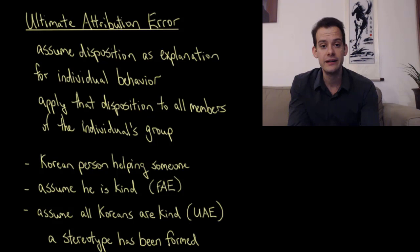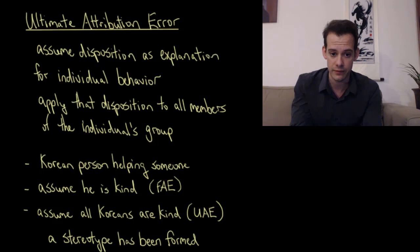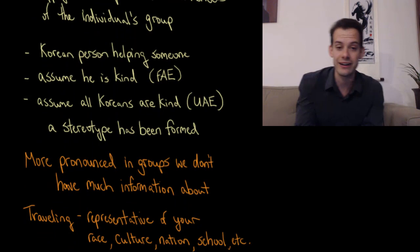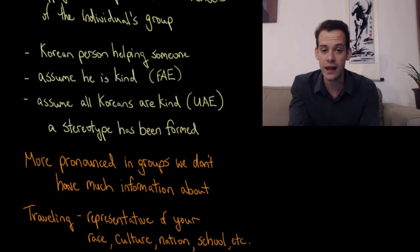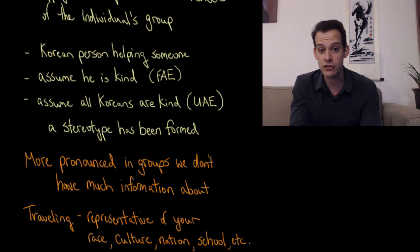For example, imagine I see a Korean person helping someone and I make the fundamental attribution error — I assume he's helping because he's a kind person. The ultimate attribution error would be concluding that all Koreans are kind people. I'm forming a stereotype about the dispositions of the entire group. I'm more likely to do this if I don't have much information about this group. If this is the only Korean person I've ever seen, the gaps in my knowledge will be very large, so the one thing I might know is that I saw a Korean person helping somebody once, and I'll go on the assumption that Koreans are kind people.